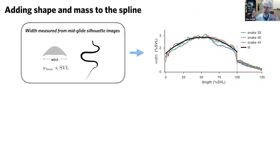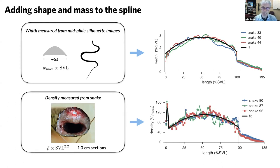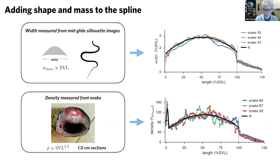We also need to know how thick the snake is — measured from images. And we need to know where the mass was distributed in the body. If you're eating lunch or don't like gross anatomy, look away now. We had snakes that died naturally, stored in our freezer. We take them out and cut the body into one-centimeter pieces, then weigh each piece to get a mass distribution along the body. The snake has the most mass in the middle; the tail has very little mass — it's kind of flimsy.